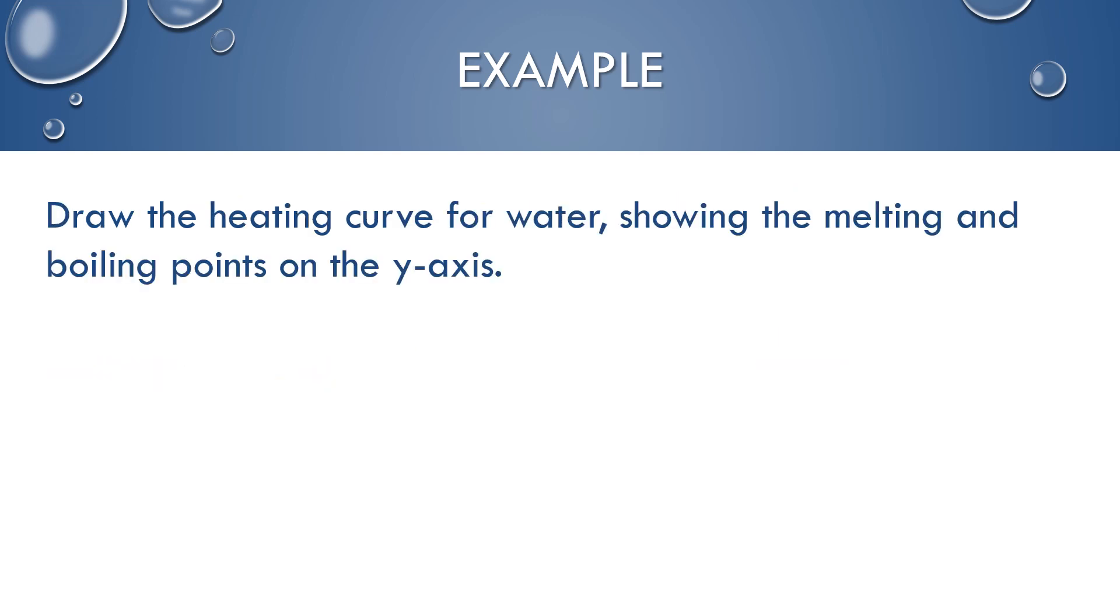Our second example here, we want to draw the heating curve for water. We want to show the melting and boiling points. Remember, heating curve: solid, melting, liquid, vaporizing, gas. We want to show the melting and boiling points on the y-axis. The y-axis is temperature. For water, the melting point, the freezing point for water, is 0 degrees Celsius. For vaporization, it is 100 degrees Celsius. If you want, you can put that into SI units, Kelvin. So 373.15 Kelvin or 273.15 Kelvin on your y-axis there.